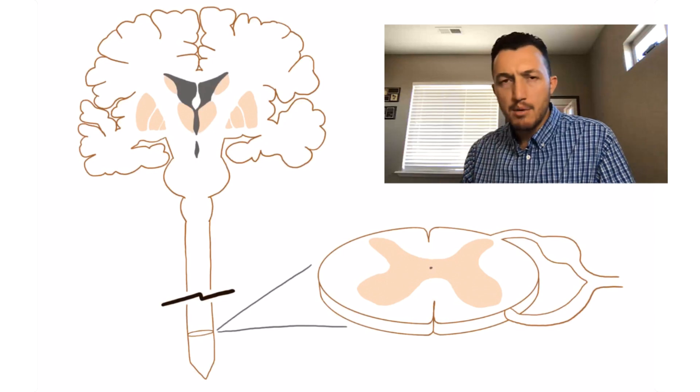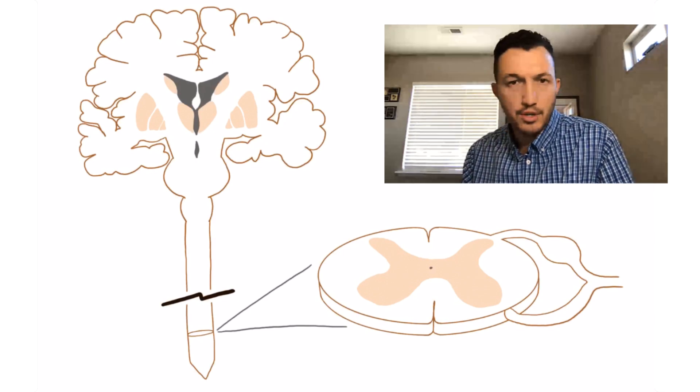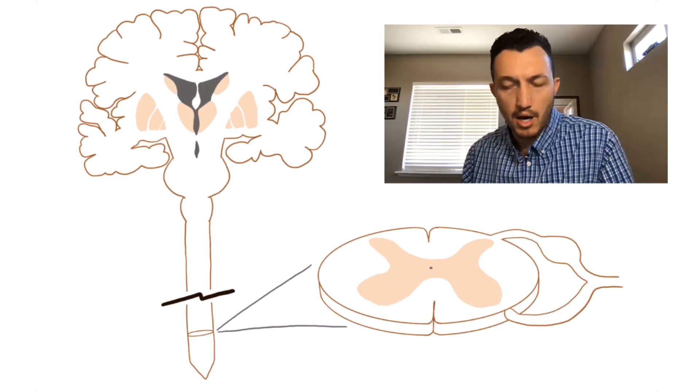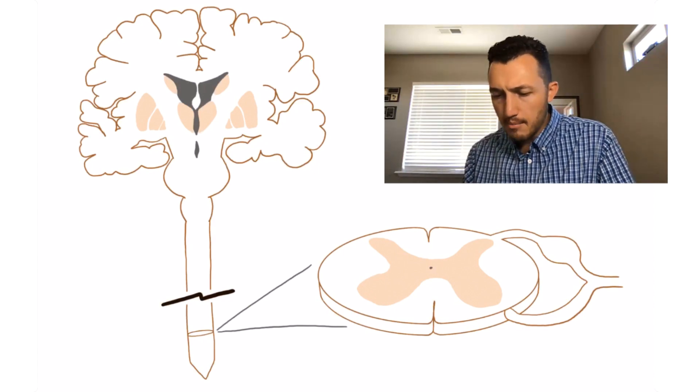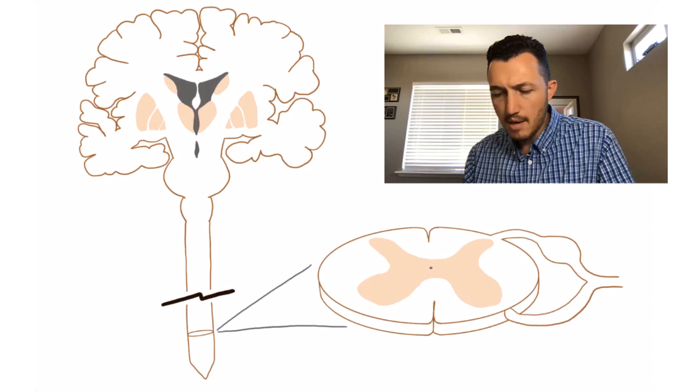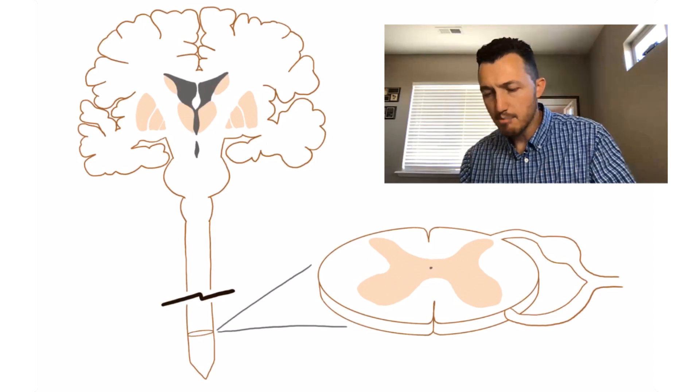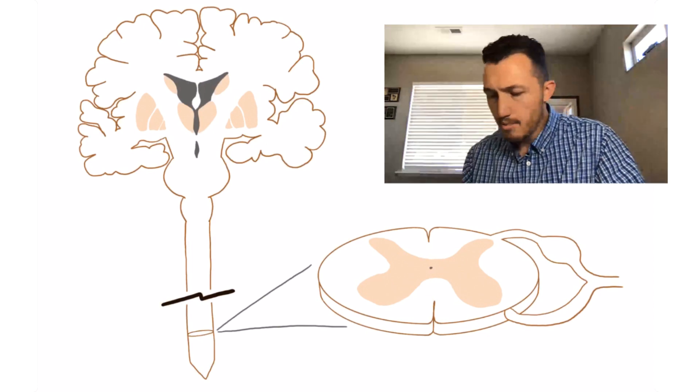And we're going to keep it pretty general today. We could get into some pretty in-depth neuroanatomy, but we're going to keep it rather broad today. So as you can see here on my drawing, we've got the brain up here in the top left. We've got the brain stem as part of that and the spinal cord.